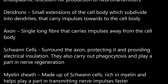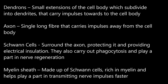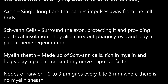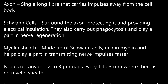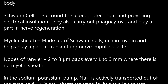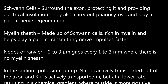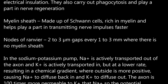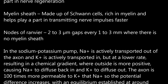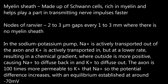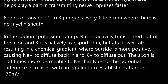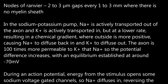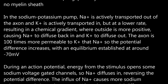Myelin sheath: made up of Schwann cells, rich in myelin, and helps transmit nerve impulses faster. Nodes of Ranvier: 2 to 3 micrometre gaps every 1 to 3 mm where there is no myelin sheath. In the sodium-potassium pump, Na+ is actively transported out of the axon and K+ is actively transported in at a lower rate, resulting in a chemical gradient where the outside is more positive, causing Na+ to diffuse back in and K+ to diffuse out. The axon is 100 times more permeable to K+ than Na+, so the potential difference increases, with an equilibrium established at around minus 70 millivolts.